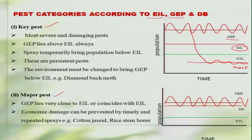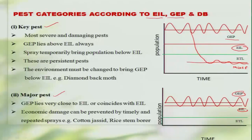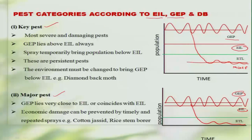The second category is the major pest. The major pest also has a GEP higher than the EIL, but it will be quite close to the economic injury level. With timely intervention for managing this pest, the population can be easily brought down below the economic threshold level.